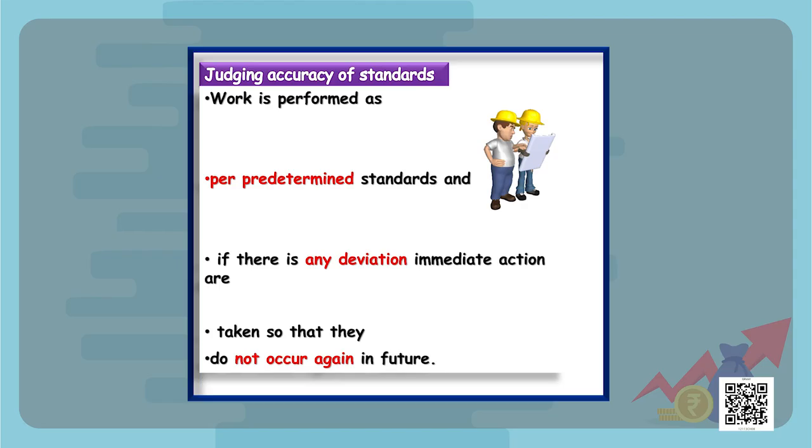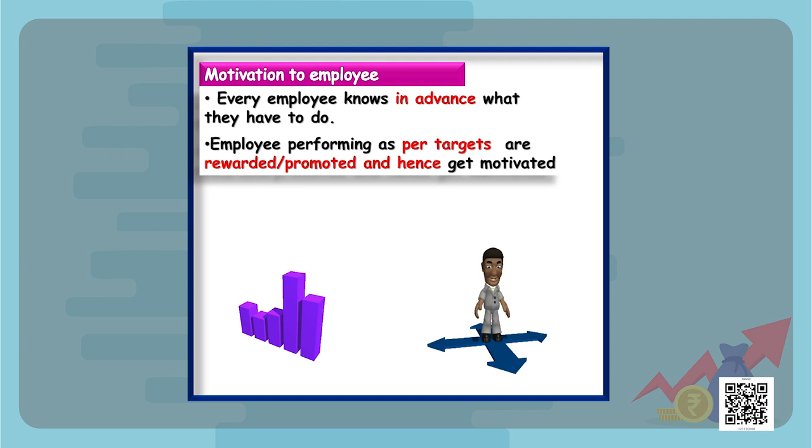Another benefit is judging the accuracy of standards. Work is performed according to predetermined objectives set during planning. If there is any deviation, immediate action is taken so that it does not occur again, and we also tend to judge the accuracy of standards — whether those standards were set according to the performance objectives or not. Controlling also serves as a motivational technique to the employees.